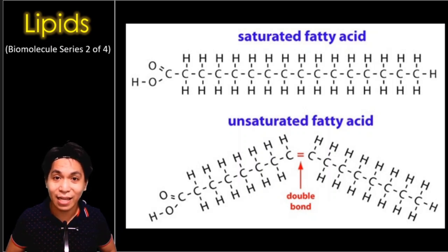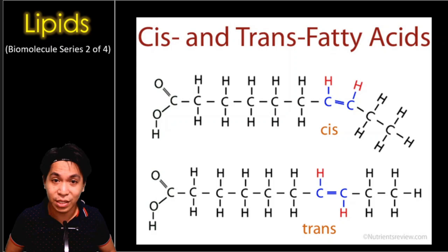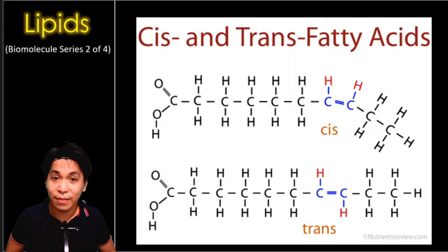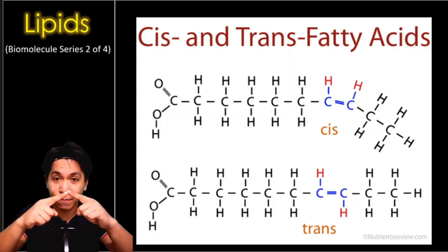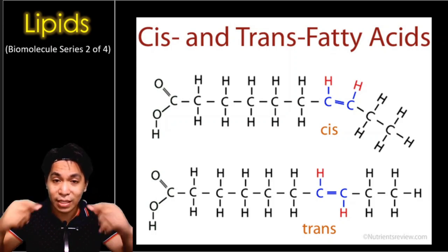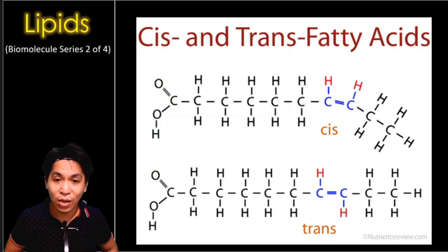There is another group of fatty acids which is basically not natural — commercially made — called trans fats or trans fatty acids. If you have a double bond, the natural tendency is for the molecule to bend. But in a trans fat, that bend from the double bond straightens up. So instead of a cis or bent form of unsaturated fatty acid, you have a double-bond fatty acid that is straight — that's what you call a trans fat.